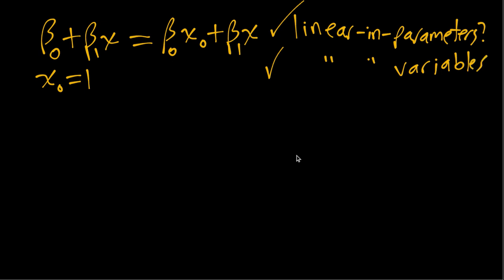Now in economics the most common way to get a more flexible model is to maintain the linear in parameters but to make it not linear in variables. So in the book in particular